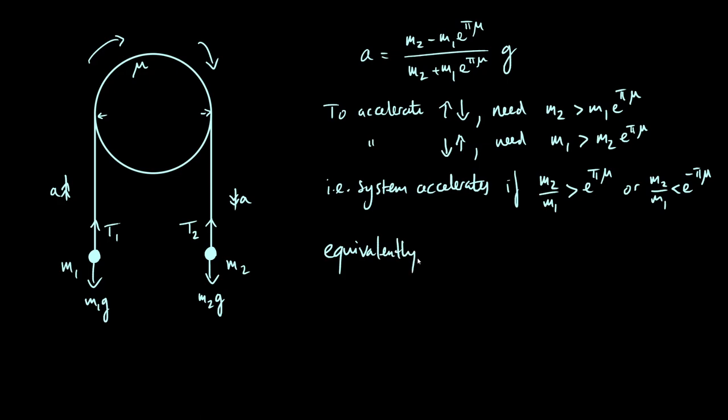So I can say equivalently, there is no motion, so the system isn't going to move at all if the mass ratio m2 over m1 is between these two values. So it's not small enough, it's not big enough, it's kind of in between these two limits. So there's no motion if e to the minus pi mu is less than m2 over m1, which is less than e to the pi mu.